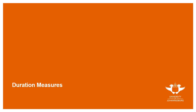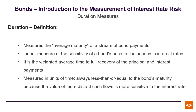We're now going to look at duration and we're going to start with its definition. Duration measures the average maturity of a stream of bond payments. It's a linear measure of the sensitivity of a bond's price to fluctuations in interest rates. It is the weighted average time to full recovery of the principal and interest payments. It is measured in units of time.